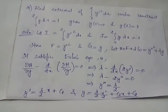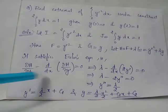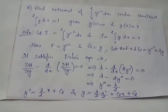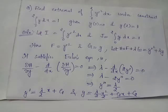H must satisfy Euler's equation: ∂H/∂y − d/dx(∂H/∂y′) = 0. We compute ∂H/∂y = λ, since the partial derivative of H with respect to y (treating y′ as constant) yields λ. Similarly, ∂H/∂y′ = 2y′, taking the partial derivative with respect to y′ while treating y as constant.